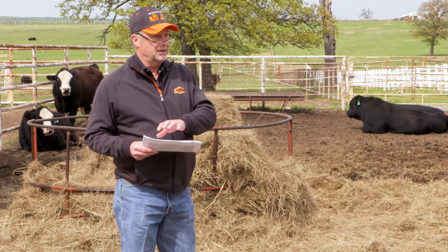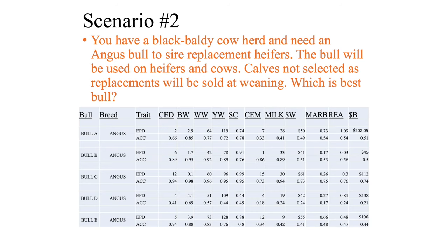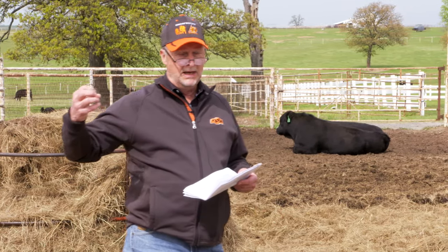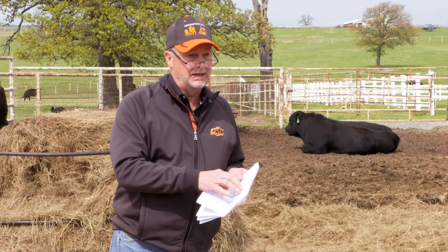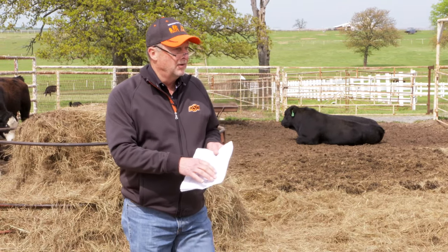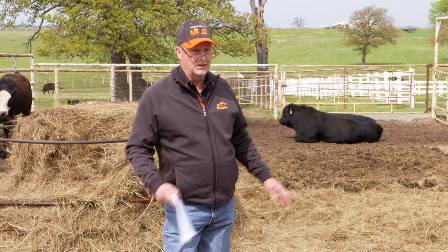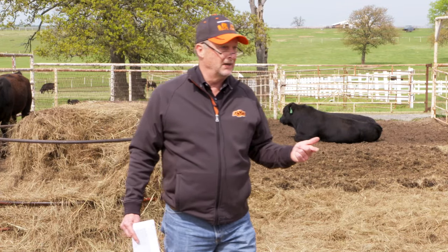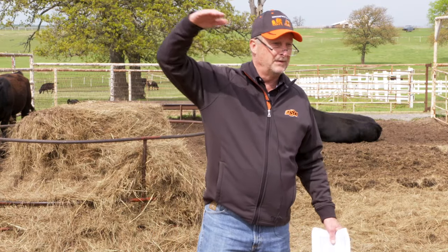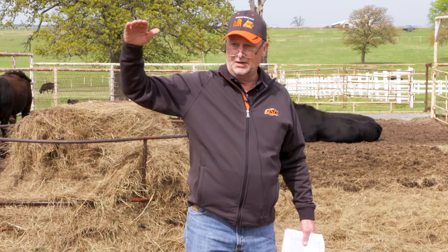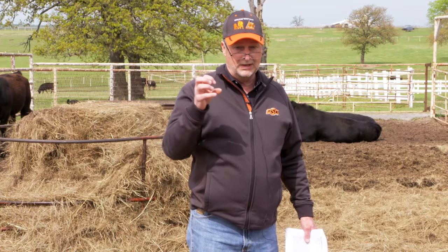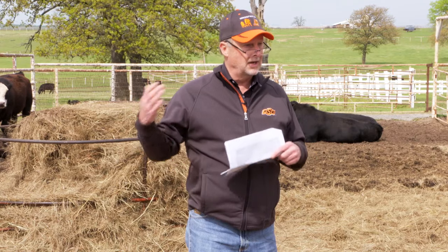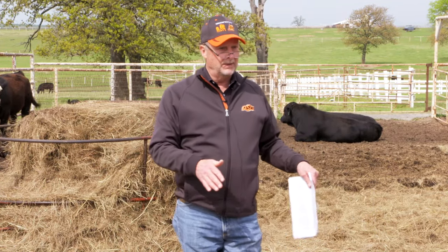We could complicate scenario number two even more if we say we think for our environment and for our forage resource, our cows are too big and giving too much milk. How can a cow give too much milk? Because milk is directly related to weaning weight. But just like anything else in life, there is a point of diminishing returns where each additional incremental increase in weaning weight takes too much milk and too much energy, too much feed, too much forage, to cover the cost of that additional pound of weaning weight. There's a point of diminishing returns.